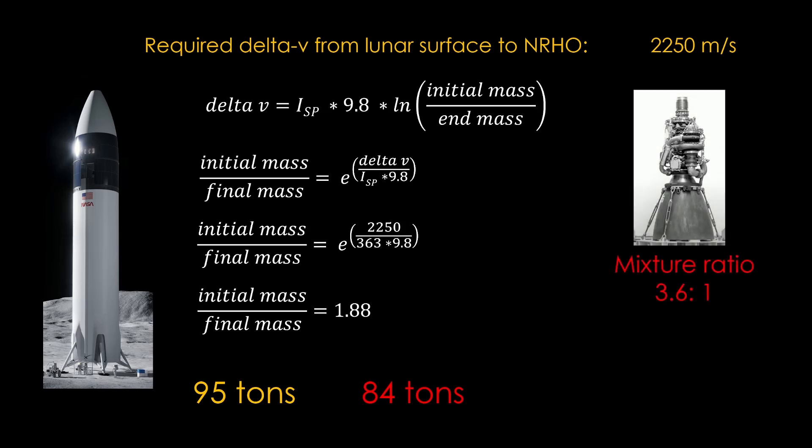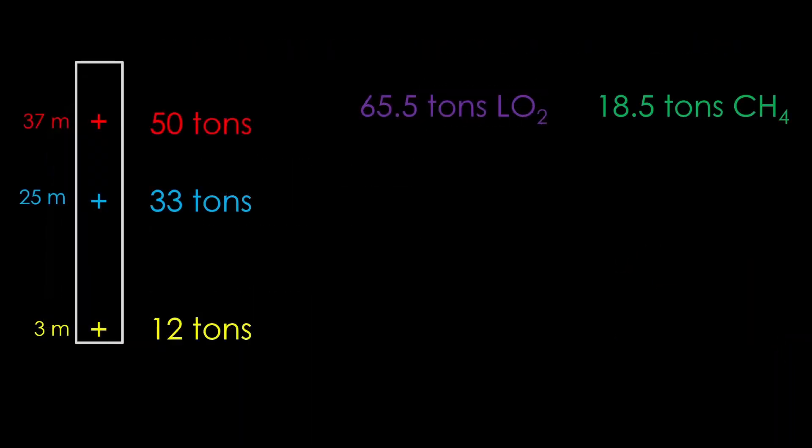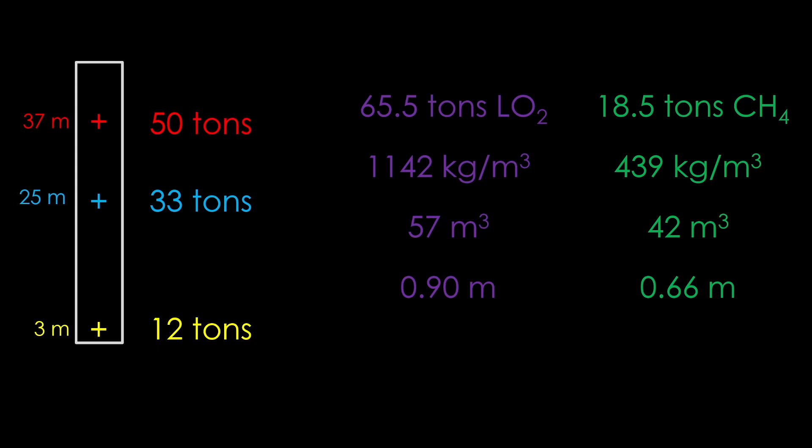We know the mixture ratio of the Raptor is 3.6 parts liquid oxygen to 1 part liquid methane, and that comes to 78% liquid oxygen and 22% liquid methane, or 65.5 tons of liquid oxygen, and 18.5 tons of liquid methane. That is the minimal amount of propellant that the lunar Starship will need to get back into orbit. How much does that fill the tanks? 65.5 tons of liquid oxygen at a density of 1142 kg per cubic meter means we have 57 cubic meters of liquid oxygen, and in a 9 meter tank that's 0.9 meters tall.